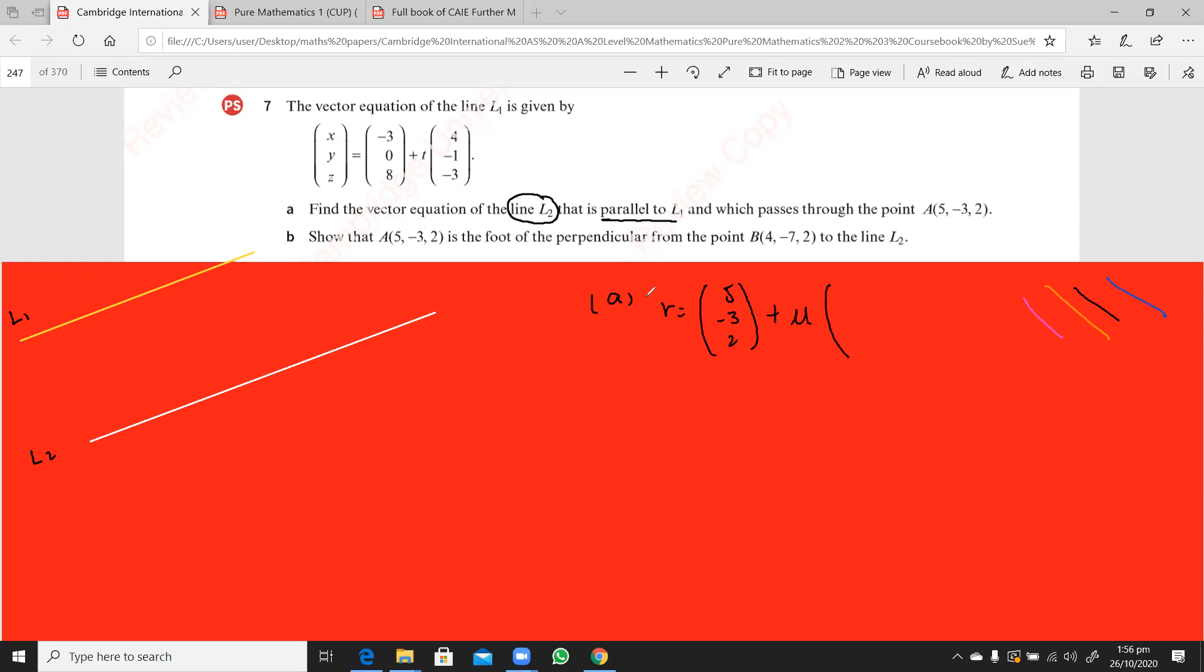mu into, since they are both parallel, so I can take this direction vector as the direction vector of the line L2 as well. So this is 4, minus 1, and minus 3. So this is the answer to the part A, where you had to write the equation of the line L2.